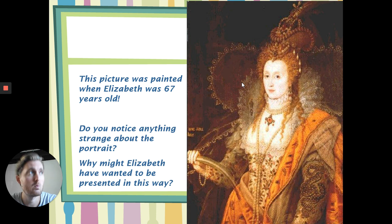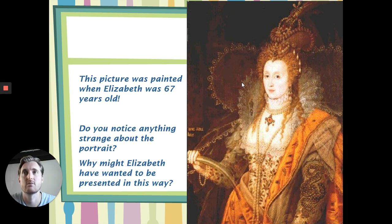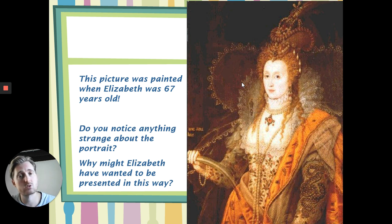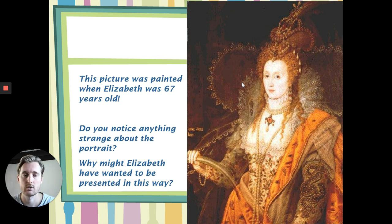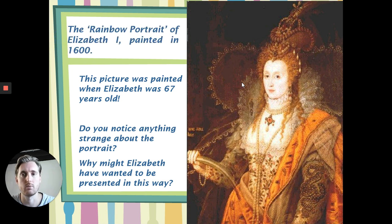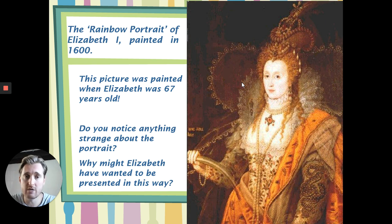She wouldn't have wanted to make herself look still powerful and beautiful if she wanted to seem vulnerable. Remember, she's never had any children and she's got no heir. So she wants to make people see that she's still powerful, that she can't be challenged, because she doesn't want to be challenged by anyone. So portraits are really, really important, and they were used as a form of propaganda to influence people — to believe kind of what she wanted.